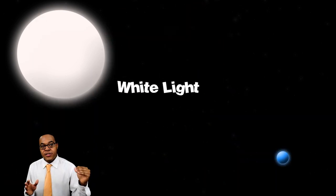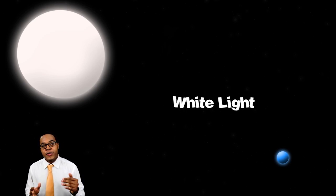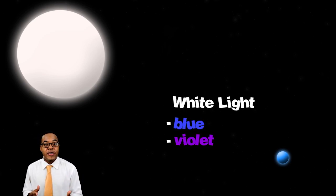As white light from the Sun enters the Earth's atmosphere some of the colors get scattered. The colors that get scattered are blue and violet and that's why our sky appears to be blue.